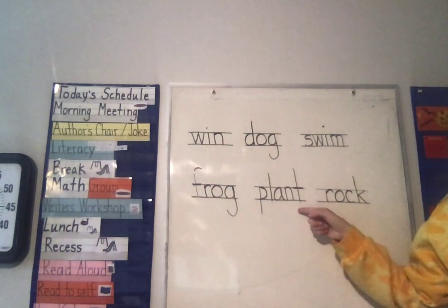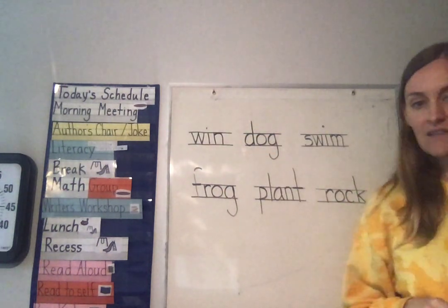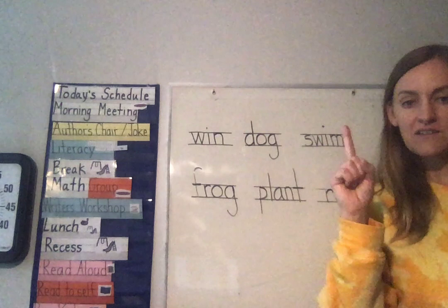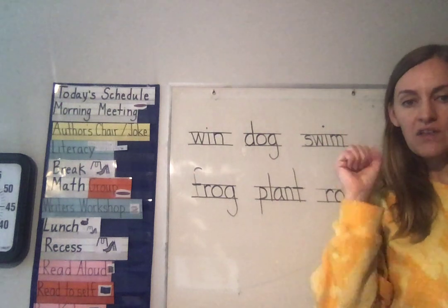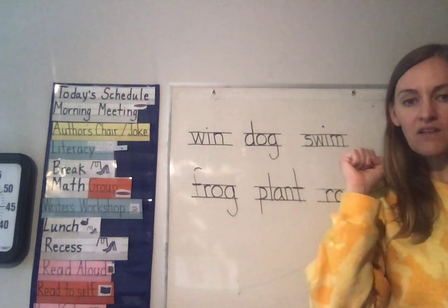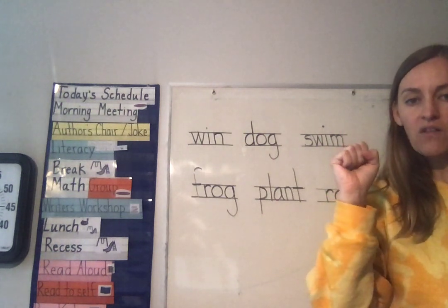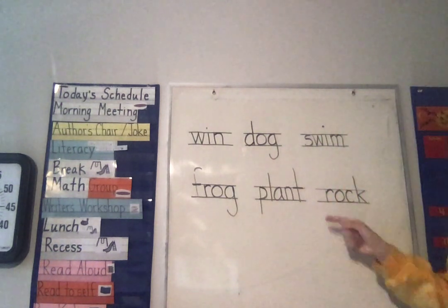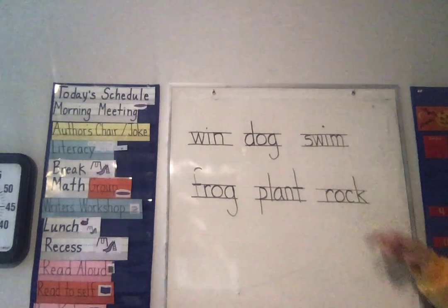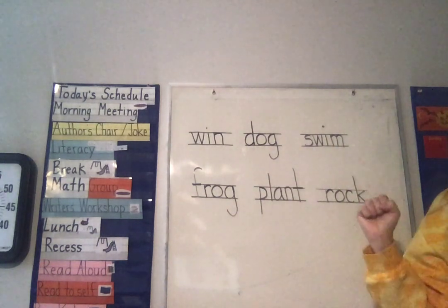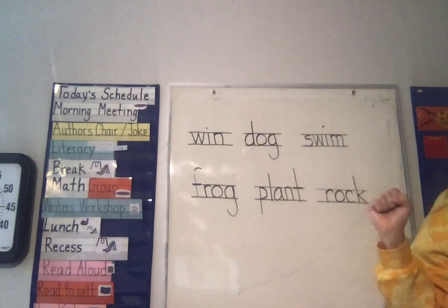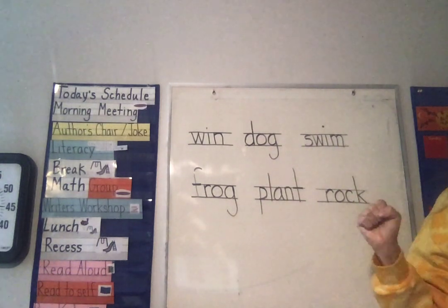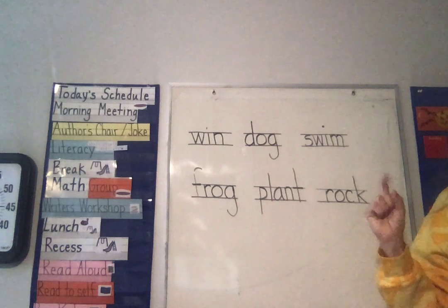Let's look at 'plant.' P — descending, L — tall, A — small, N — small, T — tall. Last one — 'rock.' R — small, O — small, C — small, K — tall.